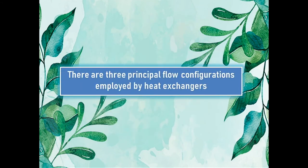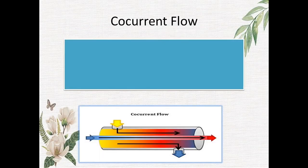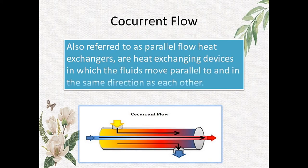There are three principal flow configurations employed by heat exchangers. First is co-current heat exchanger, also referred to as parallel flow heat exchanger, where the fluids move parallel to and in the same direction as each other.